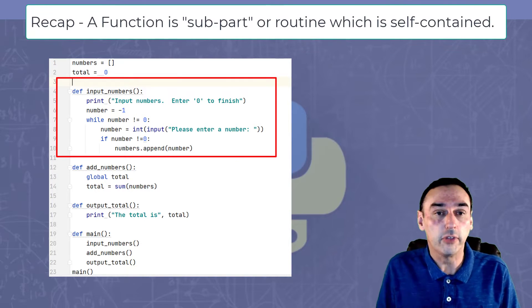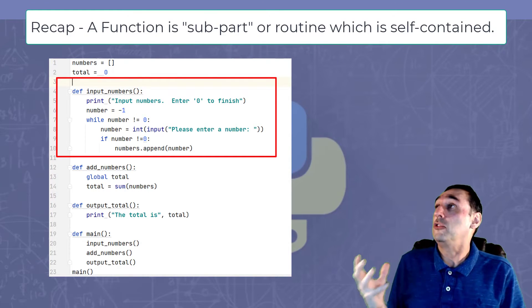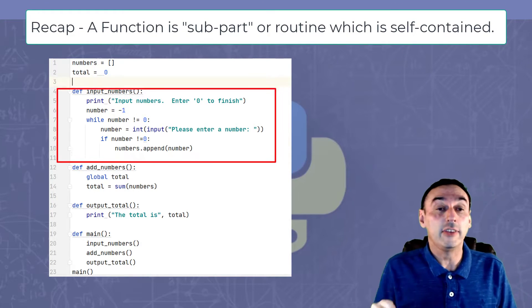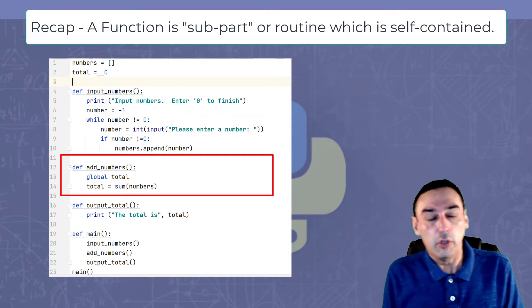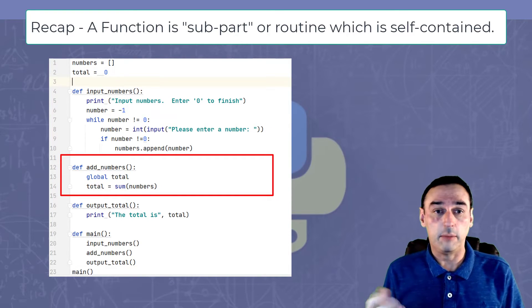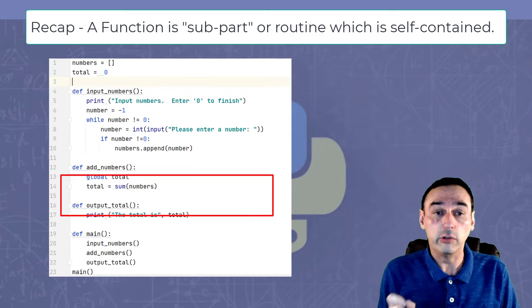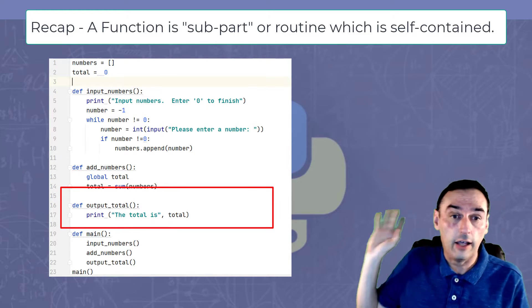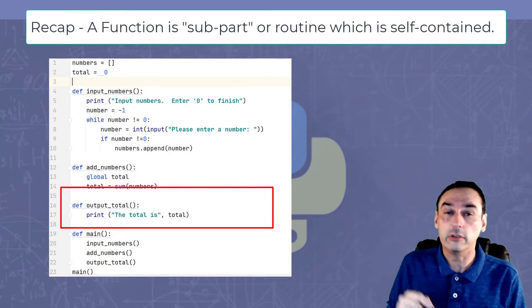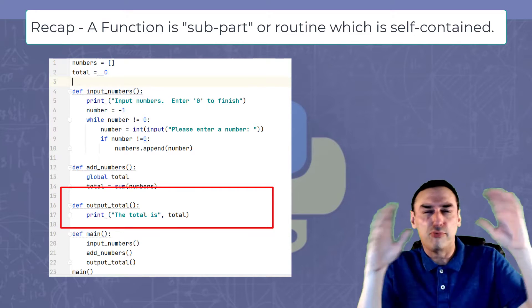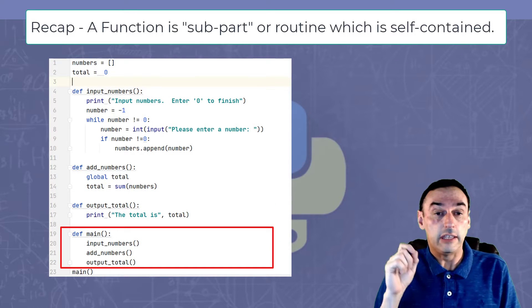If you look at this program, you've got the input_numbers which simply gets numbers from users and puts it into a list. You've then got the add_numbers which simply adds the numbers together and puts it in the variable total. They then have the function output which outputs the total, and then the final function which brings it all together is the input_numbers, add_numbers, and output_total, which is run from that main function.